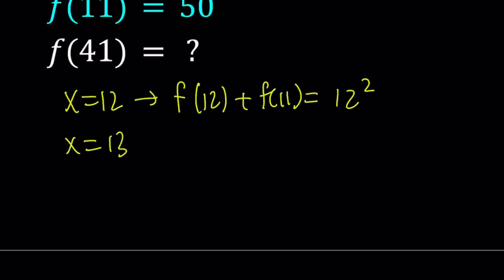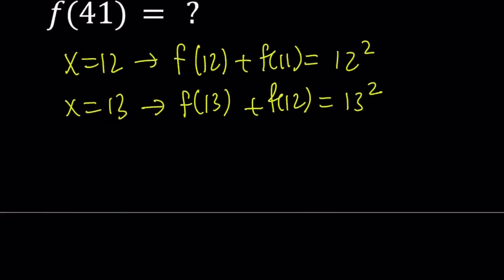Let's take a look at a couple values. If I replace x with 13, I get f(13) + f(12) = 13². At this point you don't really have to evaluate them because we're looking for a pattern. So it's better if you leave them without simplifying. And then I'm going to do 14. That's going to give me f(14) + f(13) = 14².